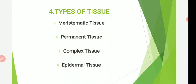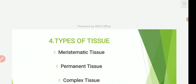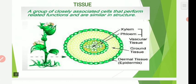Hello everyone. In this video we are going to start with topic number 4, that is types of tissue. In this topic we are going to discuss overall different types of tissues in plant body, including meristematic tissue, permanent tissue, complex tissue, or vascular tissue, and lastly epidermal tissue.